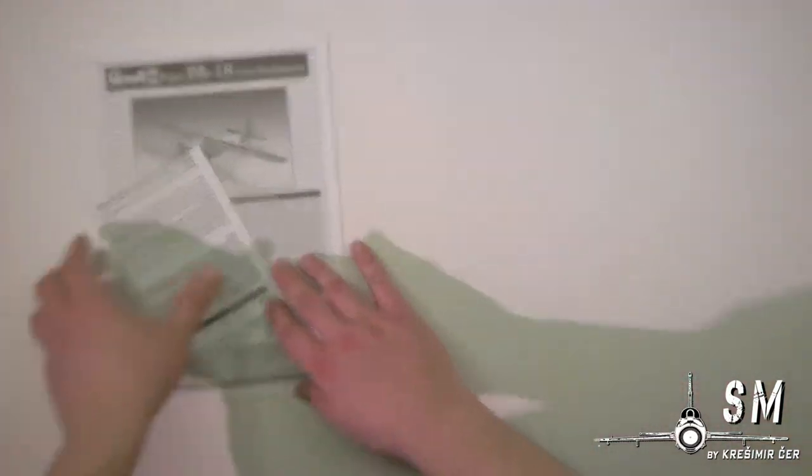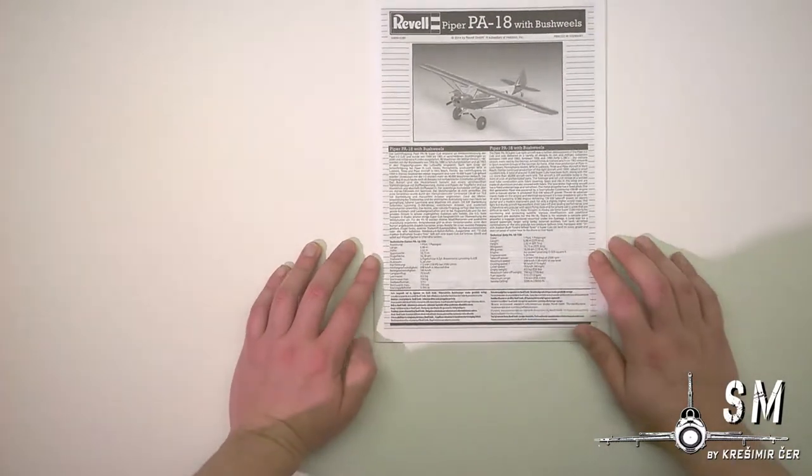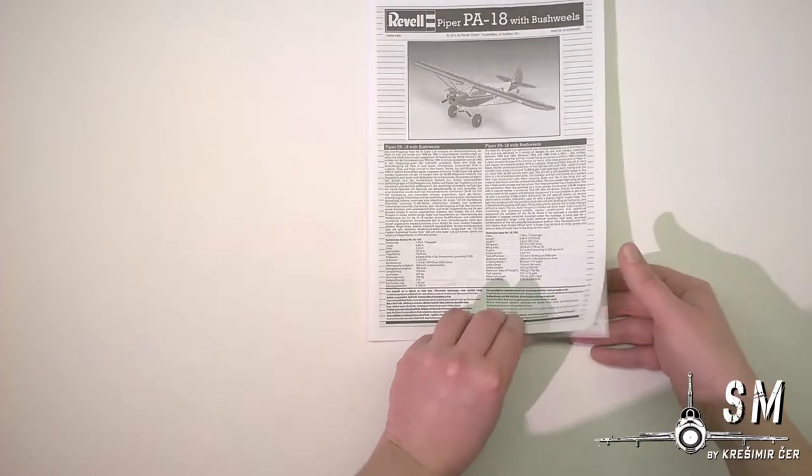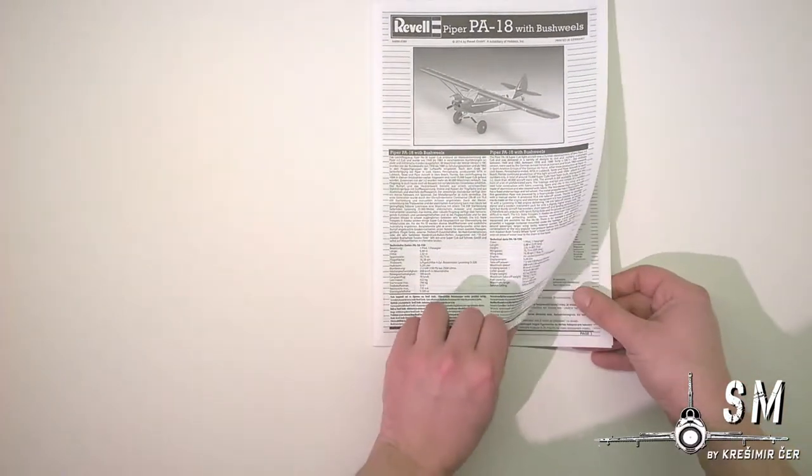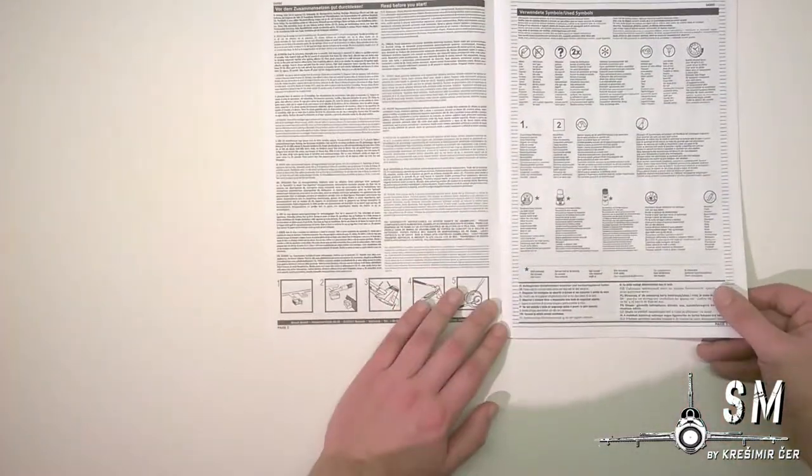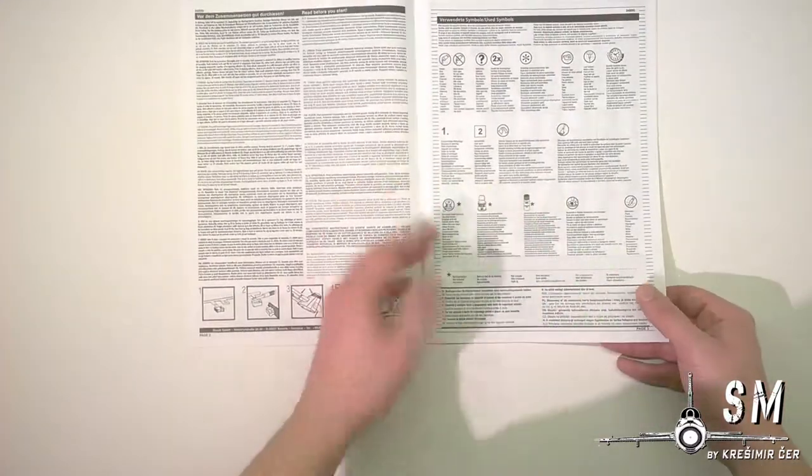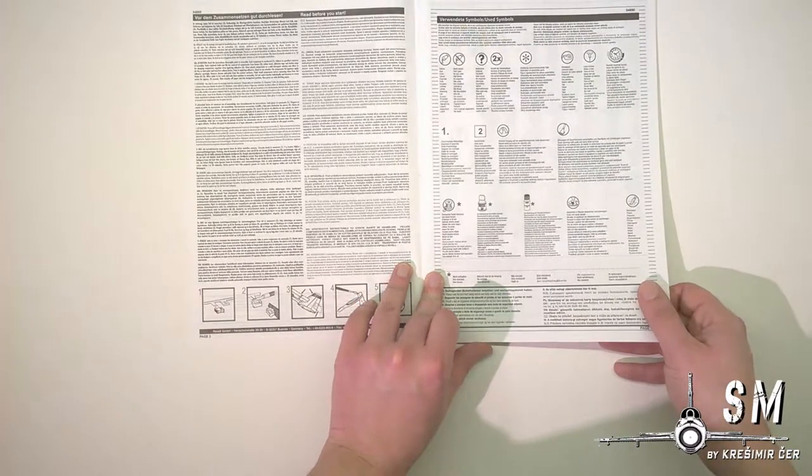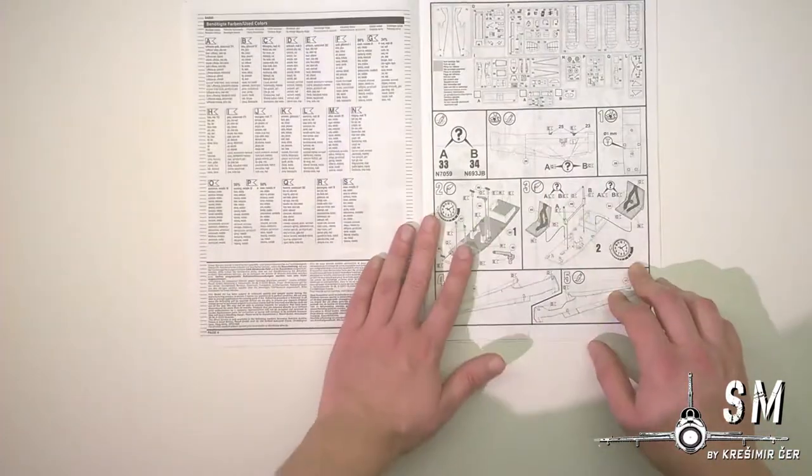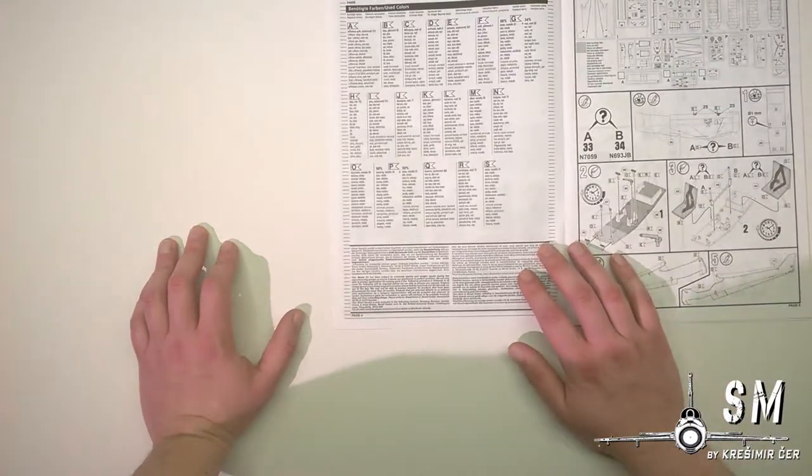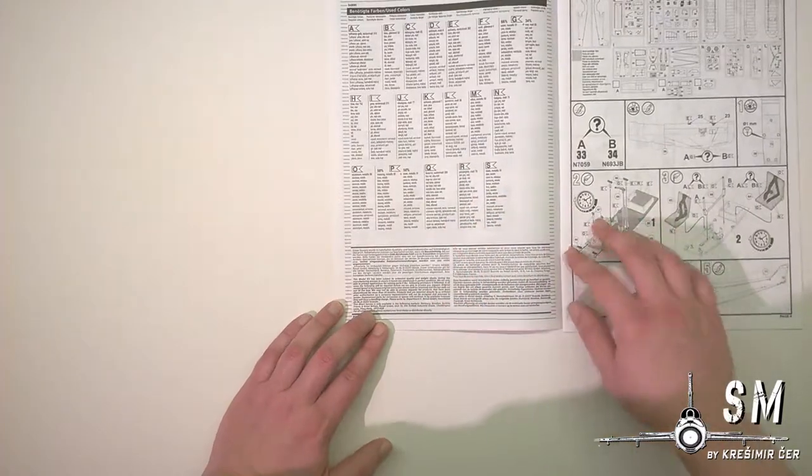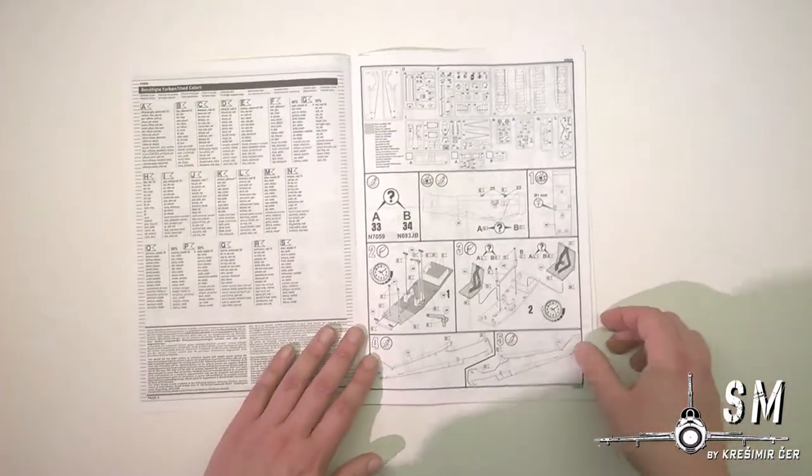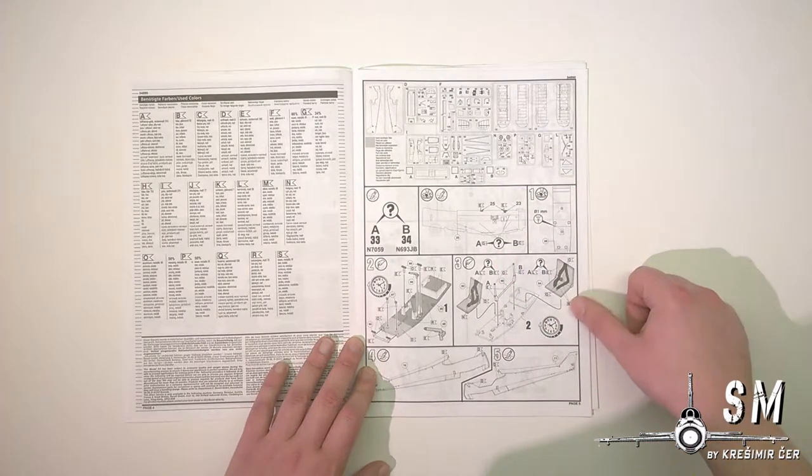Let's start with the instruction sheet. First page we have some history of the aircraft, technical specification in German and English, picture of the completed model, and some safety issues and pictograms. Next page consists of our color callouts, they're all Revell colors, some are mixed, some are straight from the bottle. Then we have our parts callout with some parts not used.